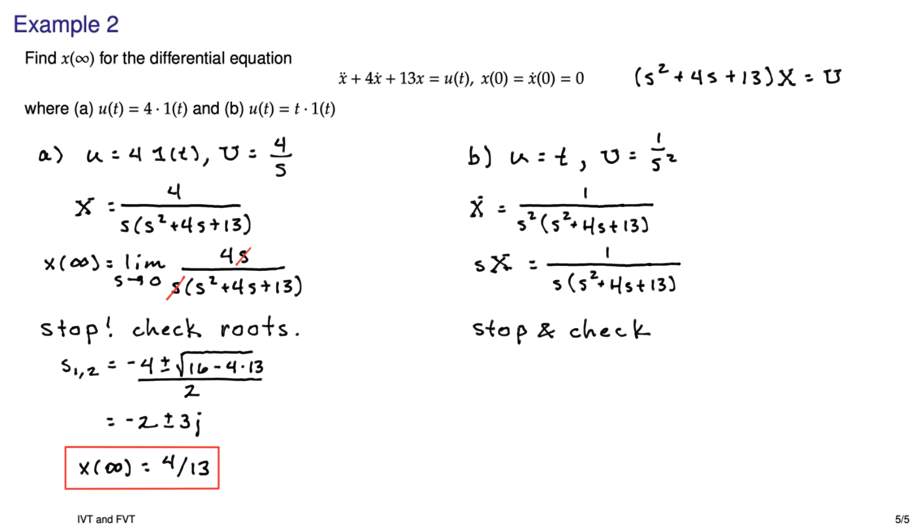So here we're going to stop and check the denominator of s times X(s), and it has three roots. One of them is at zero, and the other two are just like before. They're at negative 2 plus minus 3j. Well, the negative 2 plus minus 3j roots are just fine, but that root at zero, that's no good. Those roots, all of them, have to have negative real parts. So, the final value theorem doesn't apply, and we're done.